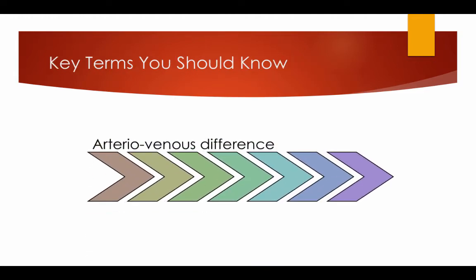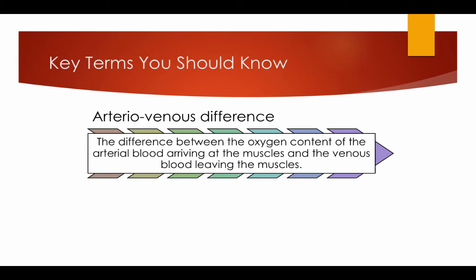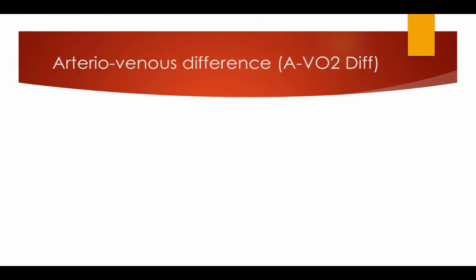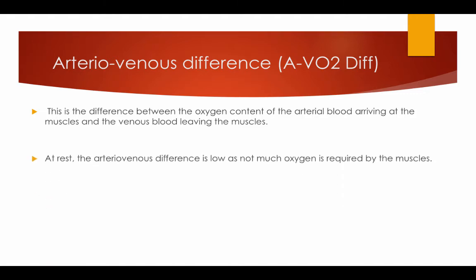Key terms you should know. Arteriovenous difference: the difference between the oxygen content of the arterial blood arriving at the muscles and the venous blood leaving the muscles.